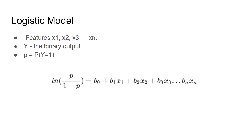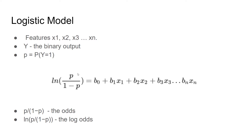Now let's look at the logistic model. Consider a model with features x1, x2, x3 up to xn, and let the binary output be denoted by y, which can take the value 0 or 1. Let p be the probability of y equal to 1. The mathematical relationship between these variables can be expressed as: natural log of p divided by (1 minus p) equals b0 plus b1*x1 plus b2*x2, etc. Here b0, b1, b2 are the parameters or weights we'll be estimating using training. The term p/(1 minus p) is known as the odds, and the natural log of that is called the log odds, which maps probability from between 0 and 1 to a range between minus infinity and plus infinity.